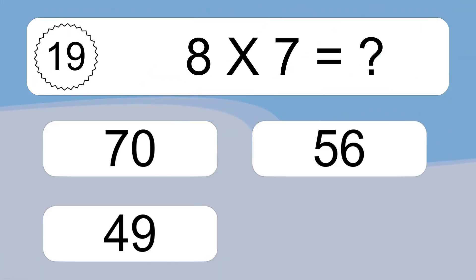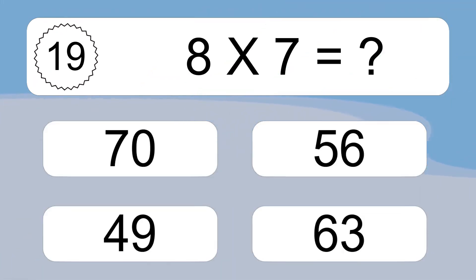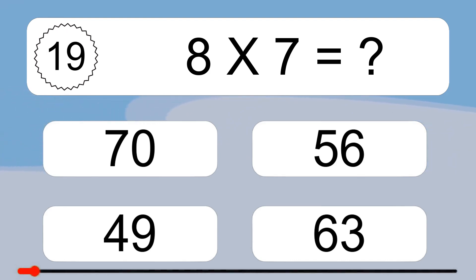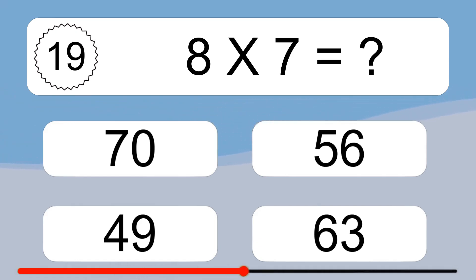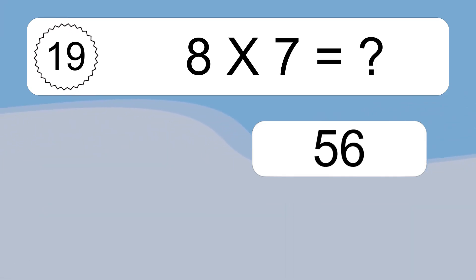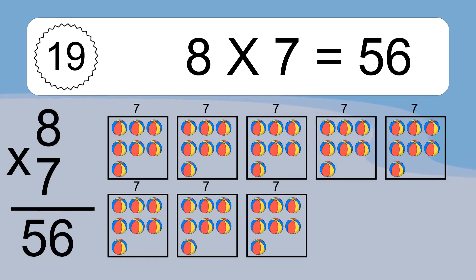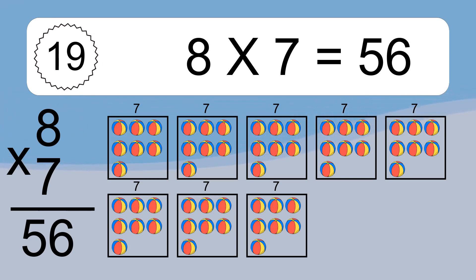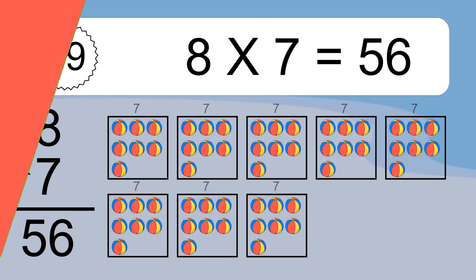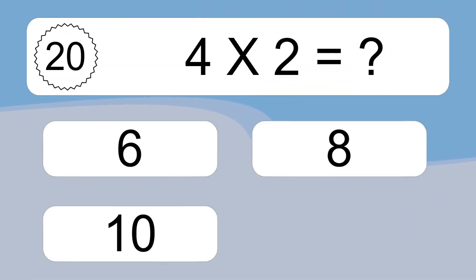8 times 7 equals what? 8 times 7 equals 56. We have 8 boxes, and each box has 7 colorful balls inside. If you count all the balls in all the boxes together, you will have 8 times 7 balls. This equals 56 balls.